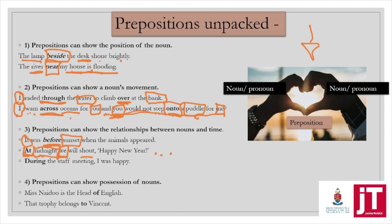'During the staff meeting, I was happy.' A staff meeting is a noun — note that if you can put 'a' or 'the' in front of a word, it is probably a noun. During the staff meeting, I was happy. Happy is an adjective, was is a verb, and I is a noun. When was I happy? I was happy during the staff meeting. Do you see the relationship between the two nouns there?